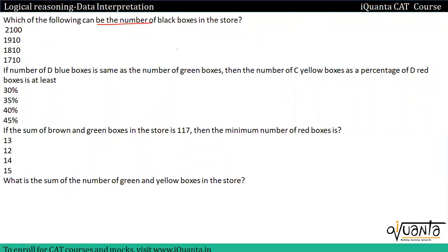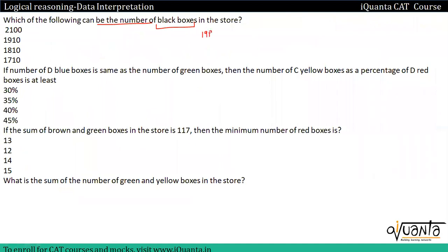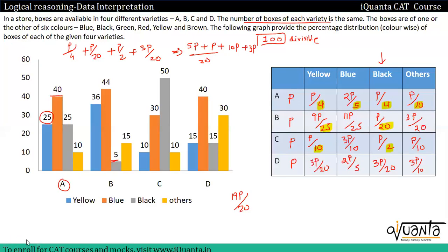Which can be the number of black boxes in the store? Black boxes total is nothing but 19P/20. If I write 19P/20 is equal to something, then I can write P is nothing but 20x/19. So which will be my P value, which will be divisible by 19. So you can see the P possible value, which will be divisible by 19. So our answer is option number 4.